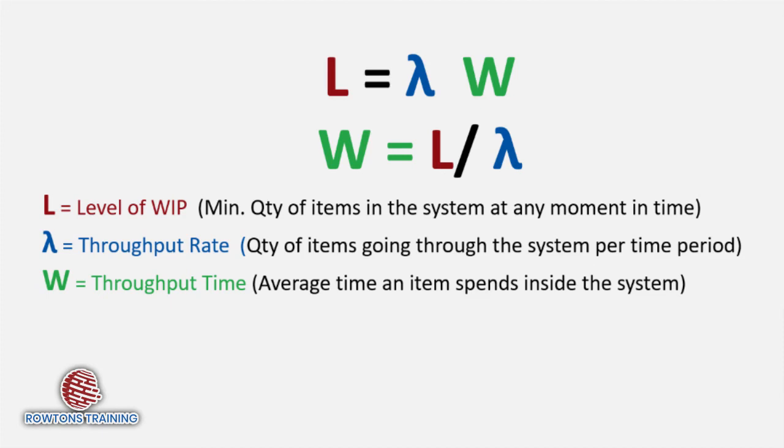So, Little's Law, an incredibly versatile formula that lets us work out the level of work in progress inventory given the throughput rate and the lead time.